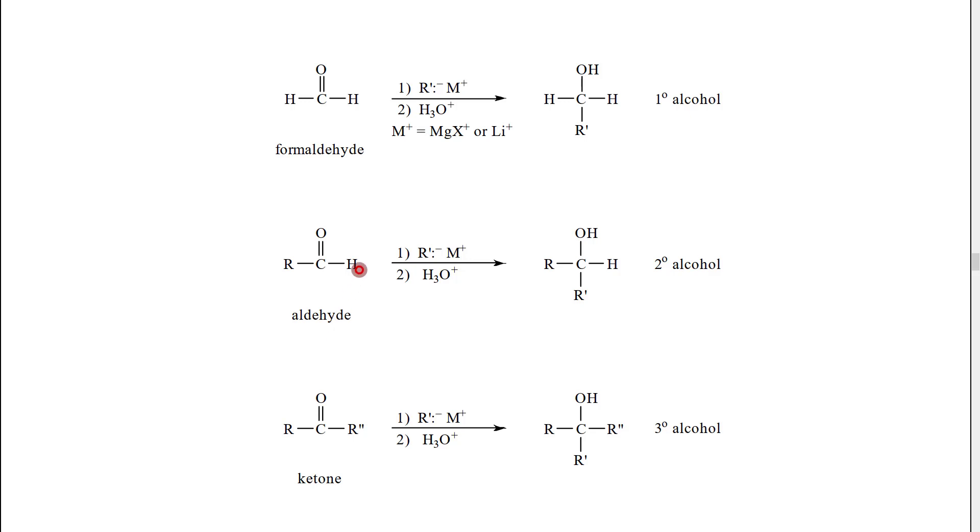If we use any other aldehyde than formaldehyde, that aldehyde is going to have one hydrogen and one carbon group already attached. When we use our Grignard reagent, we would then attach a second carbon group. We would make a single bond and a hydrogen. If we look at our alcohol carbon, that would have our original carbon group from the aldehyde plus our second carbon group from the Grignard reagent. It would be a secondary alcohol.